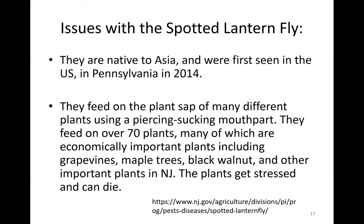Returning briefly to the spotted lanternfly: they are native to Asia and were first seen in the U.S. in Pennsylvania in 2014. They feed on the plant sap of over 70 different types of plants using a piercing, sucking mouthpart. Many of these are economically important plants, including grapevines, maple trees, black walnut, and other important plants in New Jersey. The plants get stressed and often die.